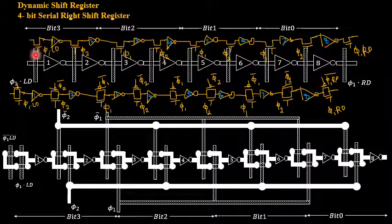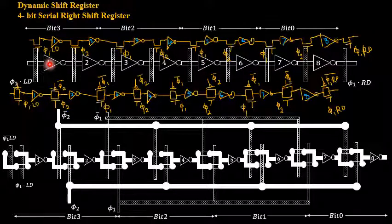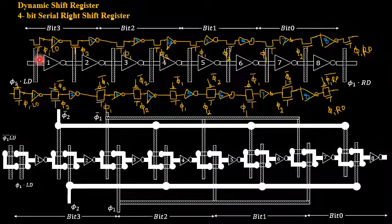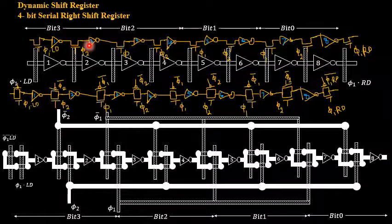If you see the second diagram, it is a combination of both stick as well as circuit or logic diagram — the NOT gate in terms of logic representation, whereas the transistor is represented using a stick diagram layer, that is polysilicon crossing an N-type diffusion. So it is a 4-bit serial shift register. If you see a transistor cascaded with an inverter, then another transistor cascaded with an inverter — this comprises one single bit.